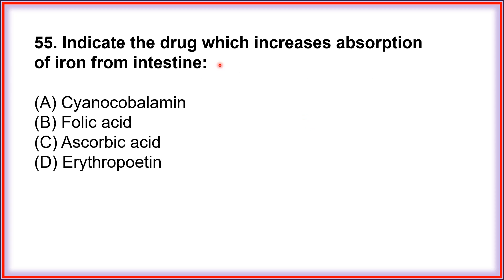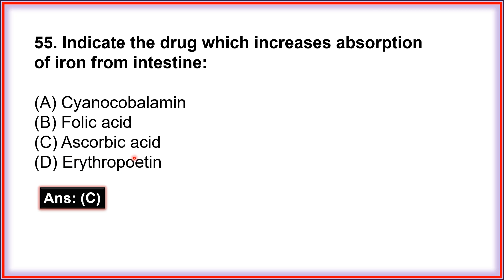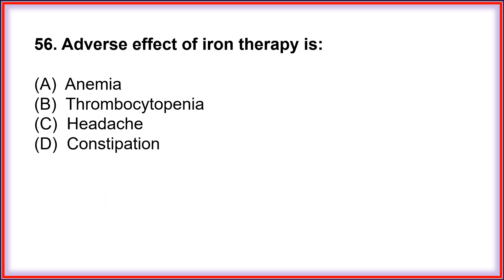Question number 55: Indicate the drug which increases absorption of iron from the intestine. A. Cyanocobalamin, B. Folic acid, C. Ascorbic acid, D. Erythropoietin. The correct answer is C. Ascorbic acid, which enhances the absorption of iron from the intestine.